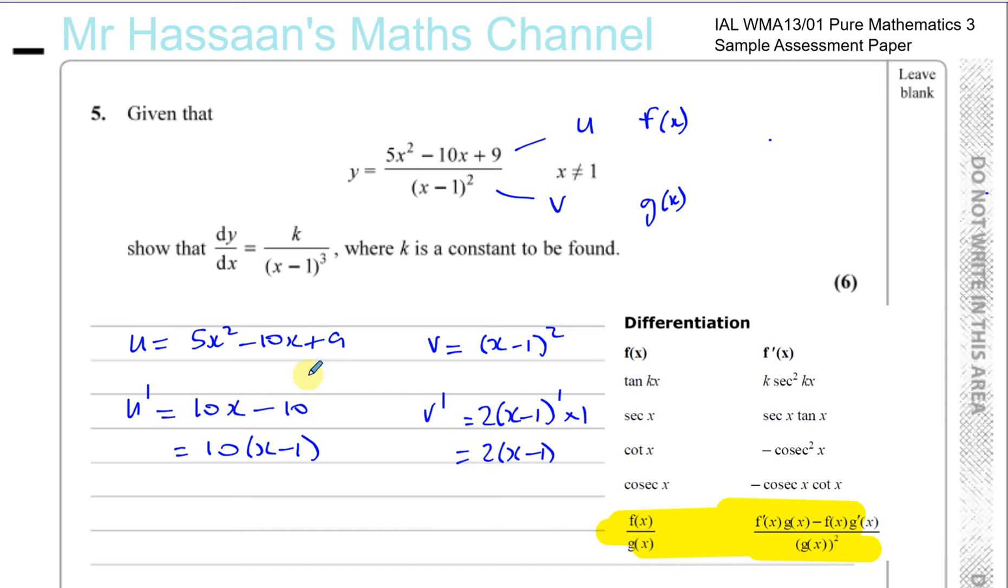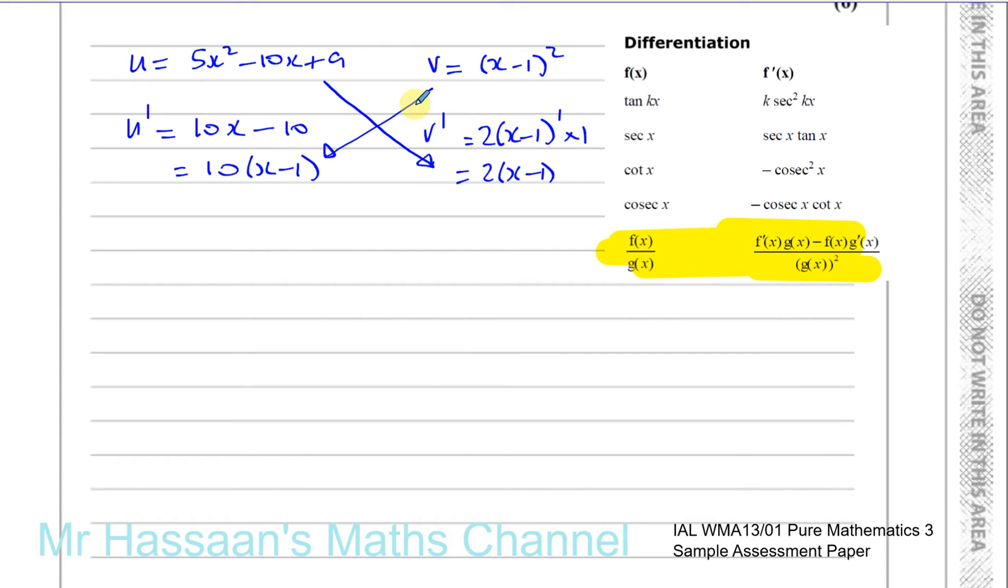So this is your f of x, and this is your g of x. And this is your f dash of x, and this is your g dash of x. So basically, you've got to have f dash of x times gx. I normally just start from the right side and go this way. I multiply these two together, and then I take away the product of these two, and divide by v squared. That's how I deal with it.